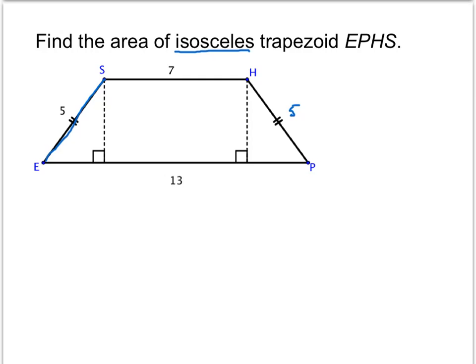first recognize that this length is 7 units, which is the same as this 7 units. So the leftover pieces, to make a full 13, must each be 3. Because the entire length was 13, and we removed 7 from the middle, 13 minus 7 is 6, which splits into two equal parts of 3.